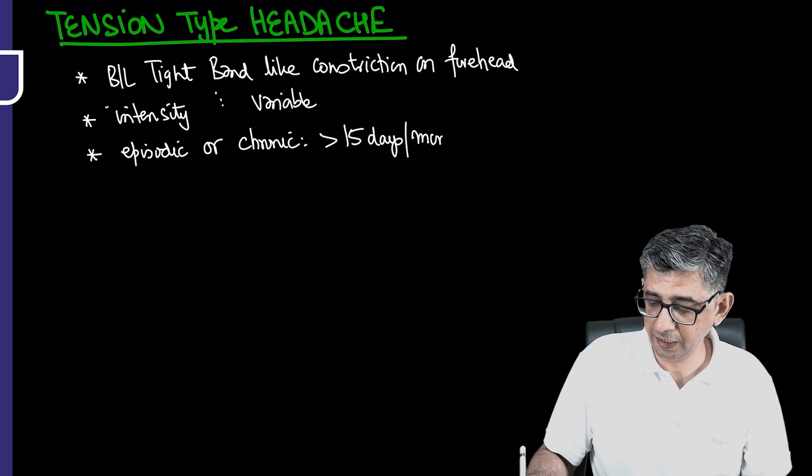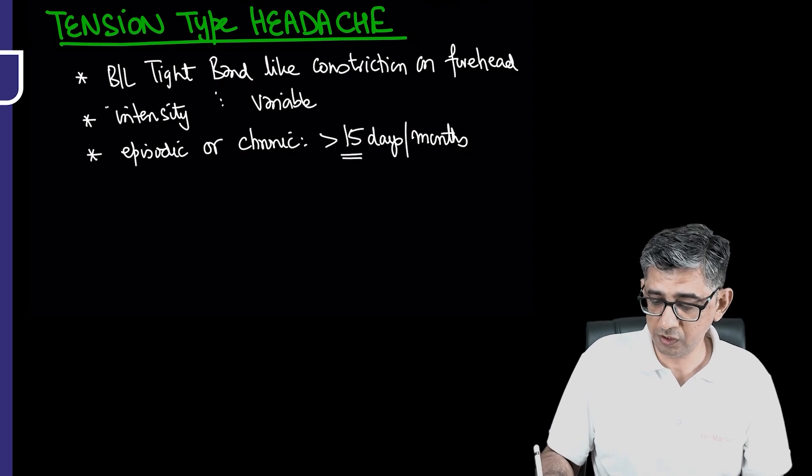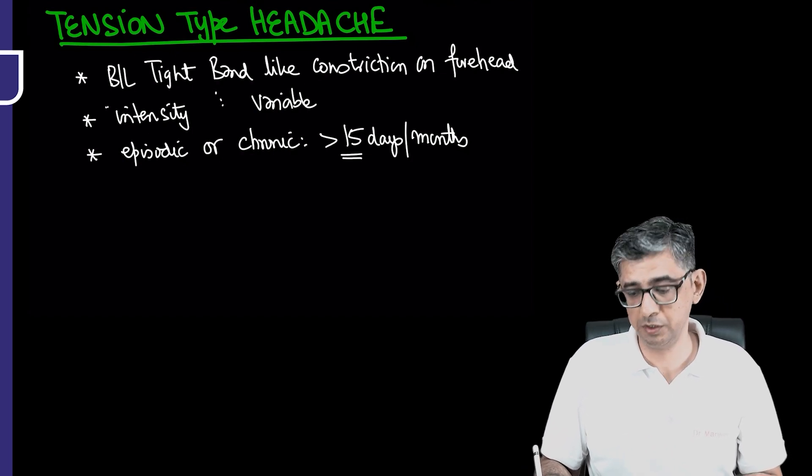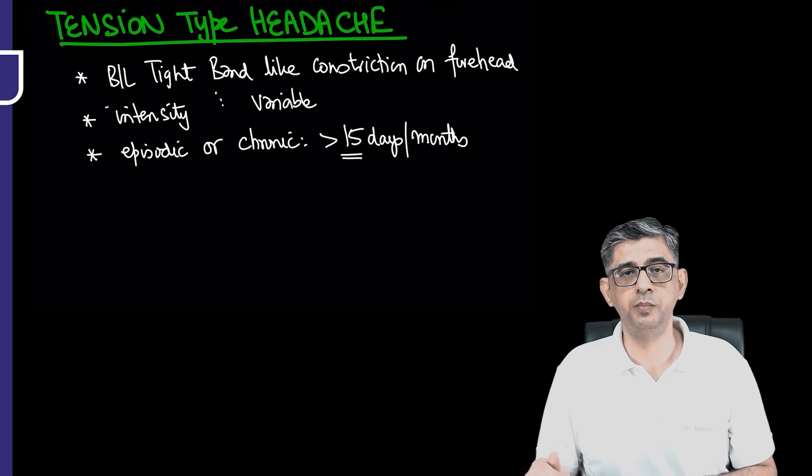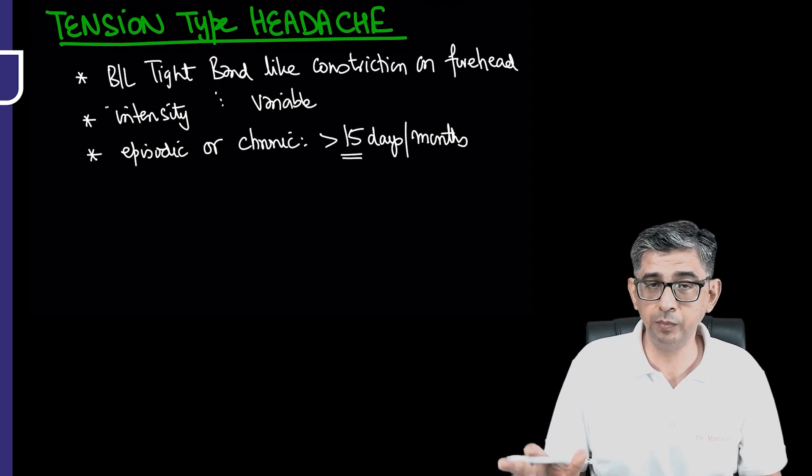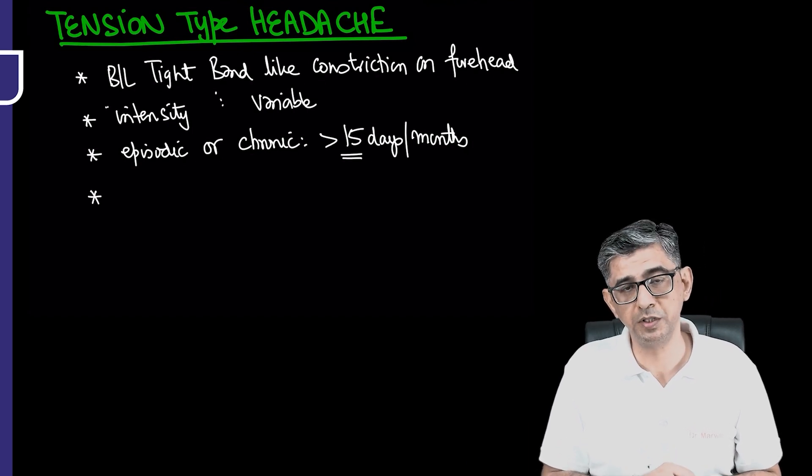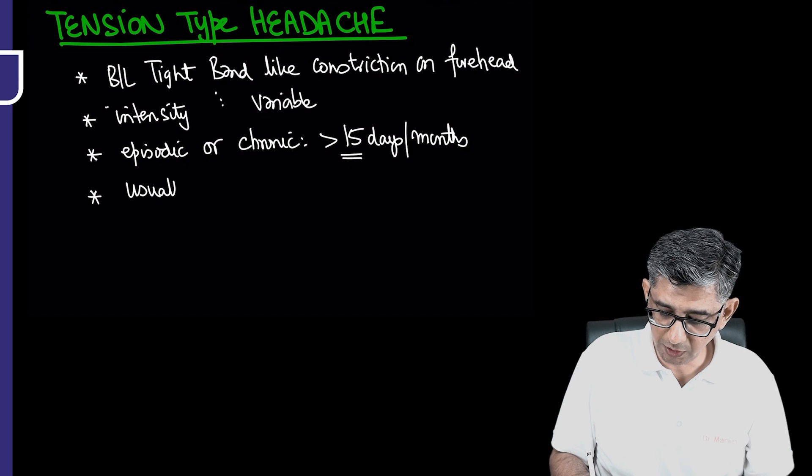Chronic definition is that the number of attacks experienced are for more than 15 days per month, and that would mean you might have to decide to start prophylaxis in this patient. Because if half of the month a person isn't going to be able to do their household chores or routine daily activity because of illness, it will hamper their personal and professional life.